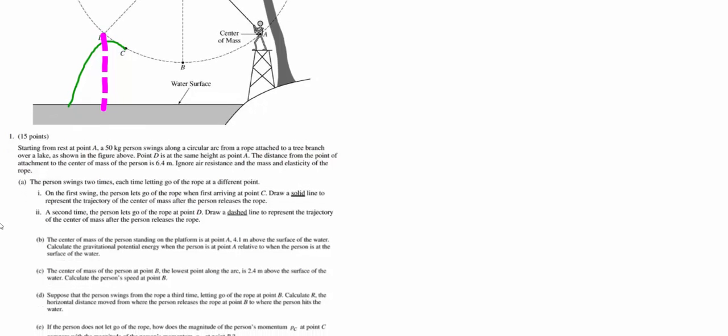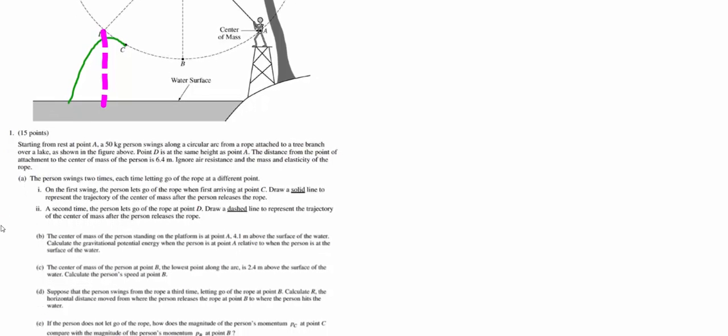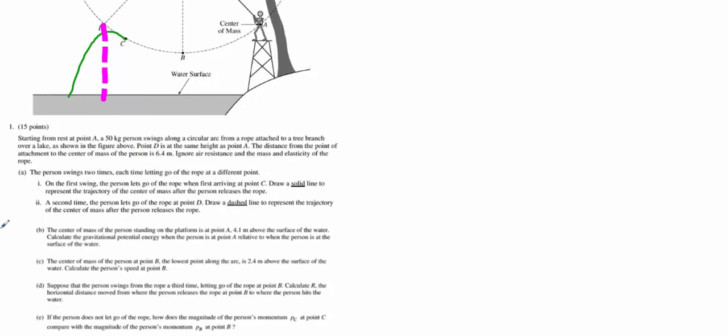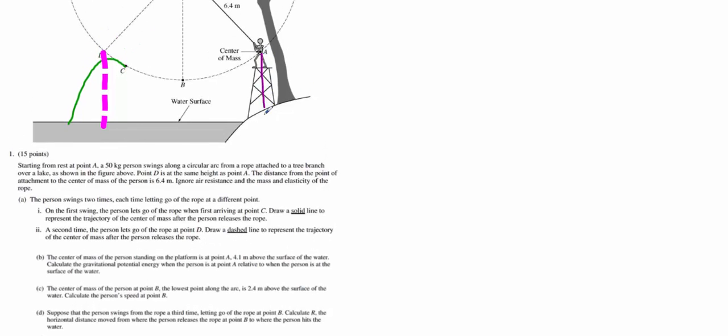Part B. The center of mass of the person standing on the platform at point A is 4.1 meters above the surface of the water. We want to know the gravitational potential energy when they're at point A relative to when the person is at the surface of the water. So basically, what is this potential energy from the platform all the way to the water? So ignore the fact that there's a little hill over here. We're talking about potential energy at a height of 4.1 meters. For my work for B, I'm going to do it up here. I like to make a knowns list first, so the mass of the individual is 50 kilograms. We know that they have a height of 4.1 meters. There's the acceleration due to gravity. I'm going to treat downward as positive, so I'm just going to keep this as positive 9.81 meters per second squared. And to make my math easier, I'm going to treat g as 10 meters per second squared for all of my problems.